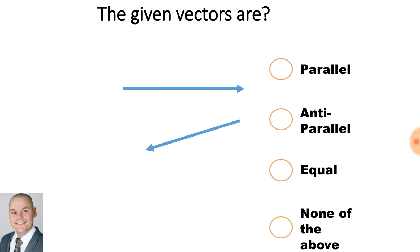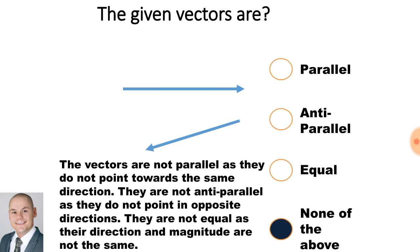The given vectors are, would you say they are parallel, anti-parallel, or equal? I would say none of the above. The vectors are not parallel as they do not point towards the same direction. They are not anti-parallel as they do not point in opposite directions. And they are not equal as their direction and magnitude are not the same.